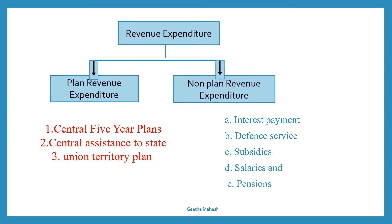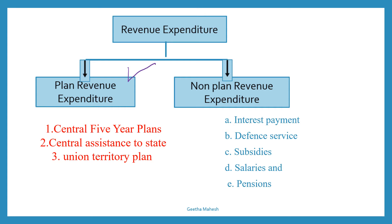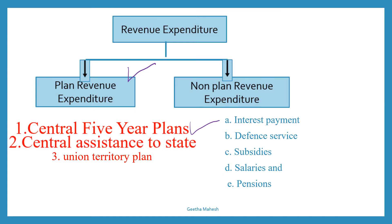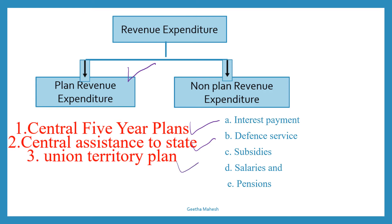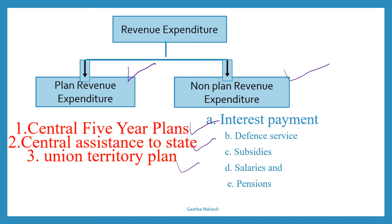The first type is planned revenue expenditure, which is the expenditure incurred on the implementation of central five-year plans and central assistance to state and union territory plans. The next one is non-planned revenue expenditure. It is the main component under revenue expenditure and covers a vast range of general economic and social services of the central government. The first item is interest payment — interest payment on market loans, external loans, and from various reserve funds, which constitutes the single largest component of non-planned revenue expenditure.